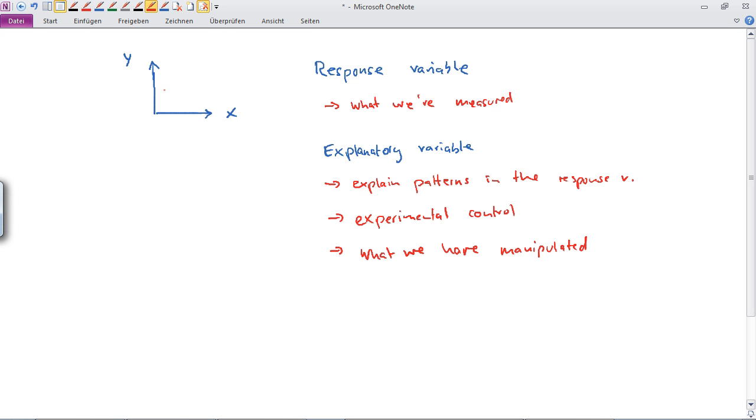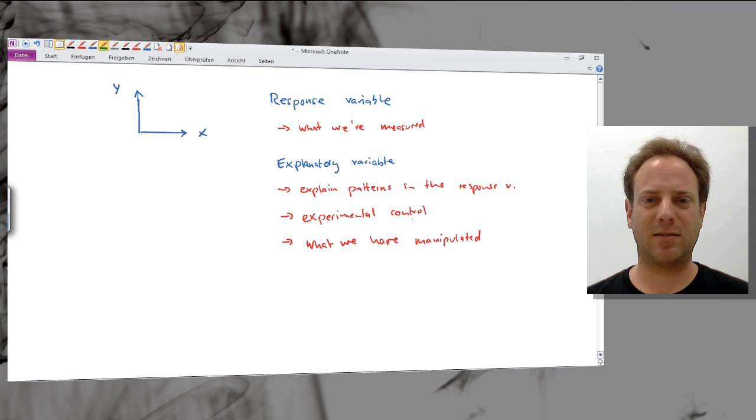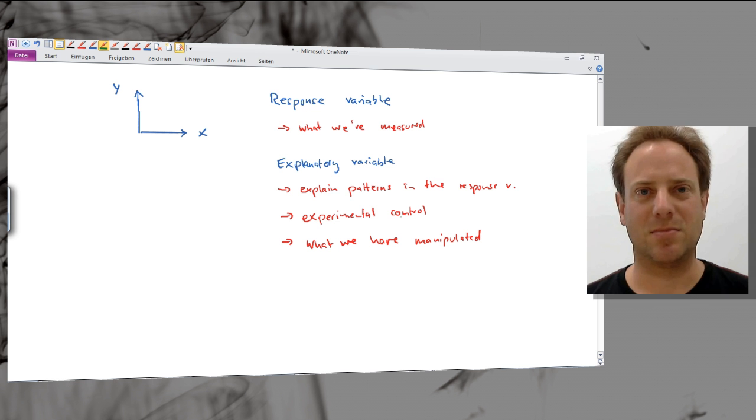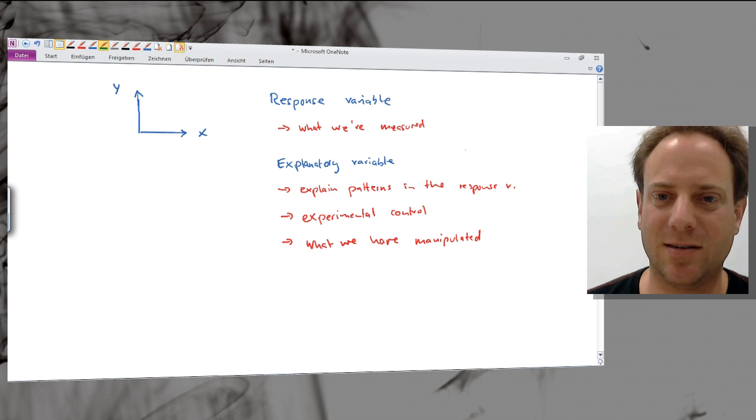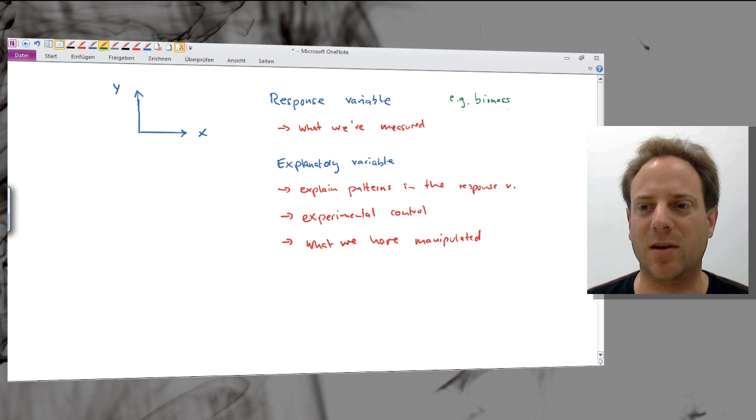Let's think of some examples. Let's say we've done a survey of plants in some experimental setting, so the potential response variable would be biomass of our plants per square meter.